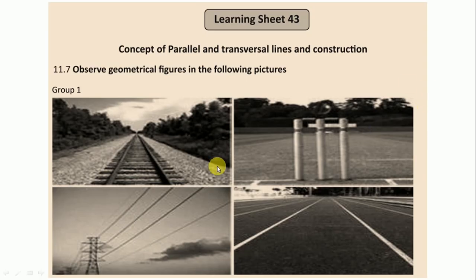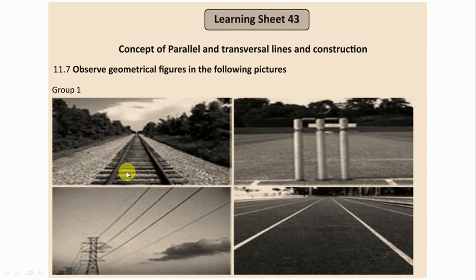In the first figure, you can see that the railway track and the wires of these poles are equidistant from each other and they do not meet or intersect at any point. So, we call this type of figures parallel lines figures.